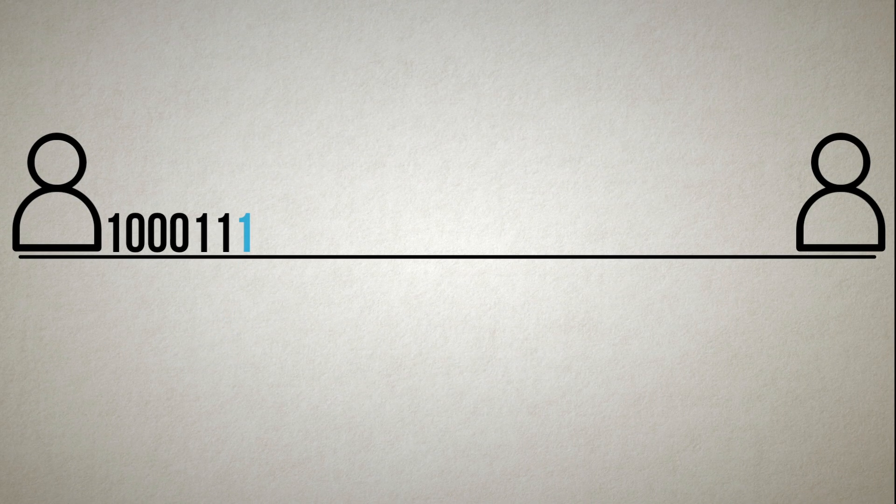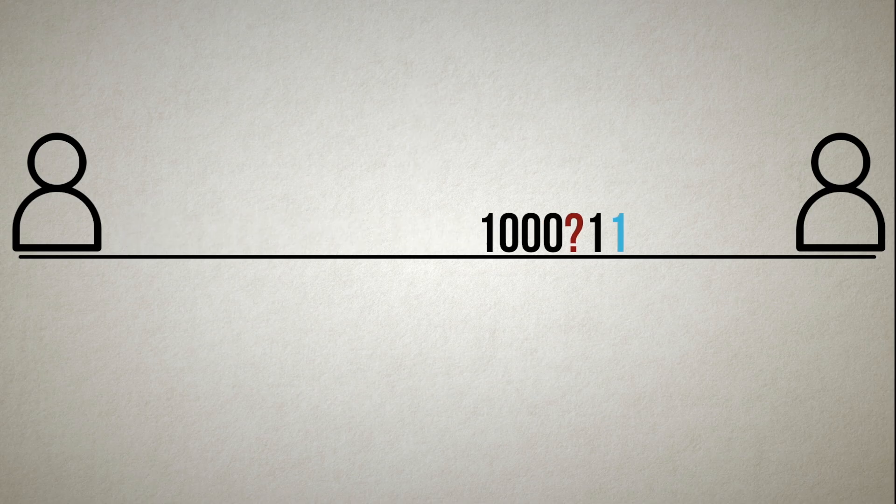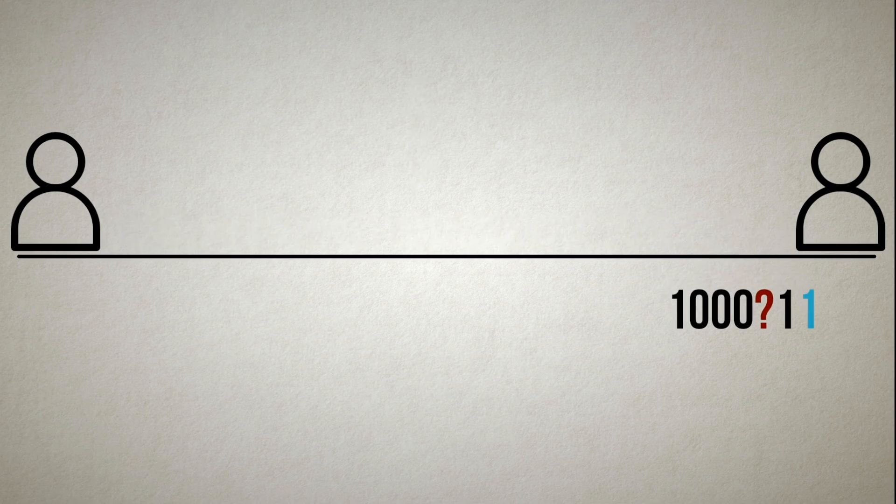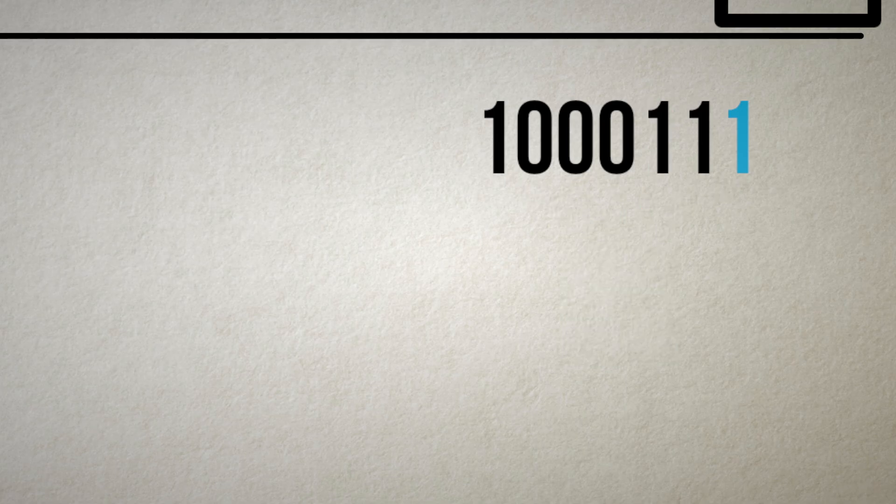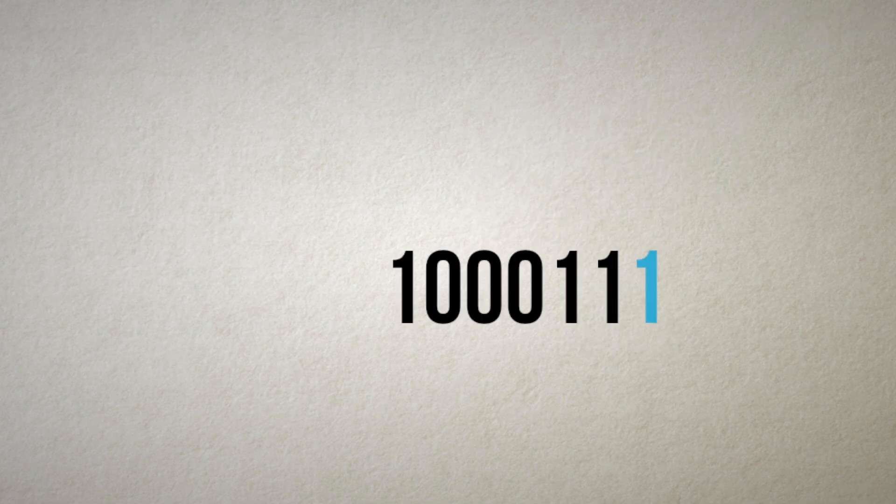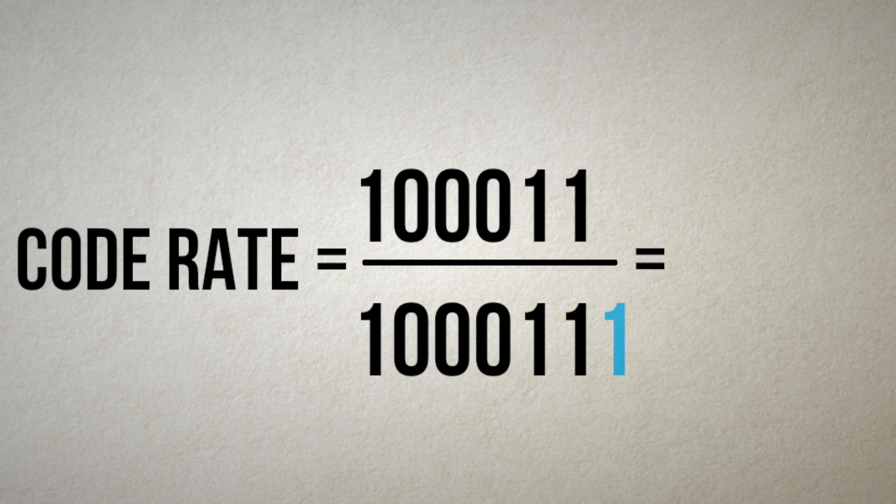Now, consider what happens when a single erasure occurs during transmission. The receiving decoder can correct this erasure with a simple operation. It counts the number of ones in the received message, and so it knows the erased bit must have been a one. Notice that a single parity check bit yields quite an improvement to the code rate compared to repetition coding.